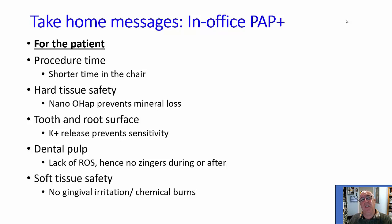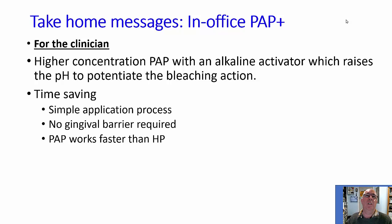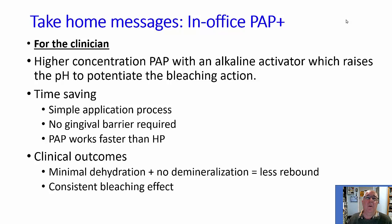In terms of soft tissue safety, there's not going to be any risk of chemical burns to the oral mucosa, the lips, the tongue, nor of irritation to the gingiva. So there is no need to apply vitamin E cream all over the tissues afterwards. For the clinician, the in-office product works at a higher pH, which potentiates the bleaching action, and the product is at a higher concentration — but it's still safe to be in contact with soft tissue. The fundamental benefits are all around saving time: a simpler application process, literally mix and apply, no need for a gingival barrier, and a material that chemically is designed to be more reactive and therefore attack colored molecules faster than hydrogen peroxide.